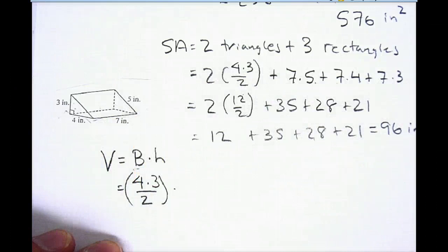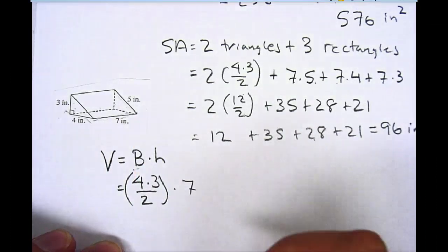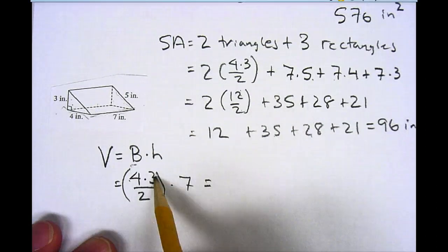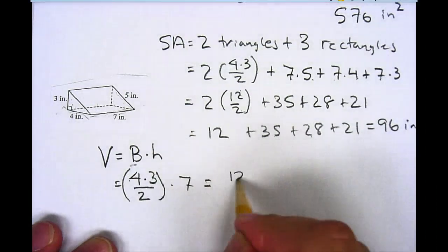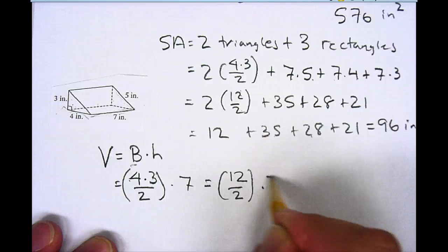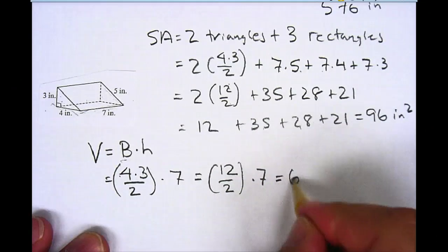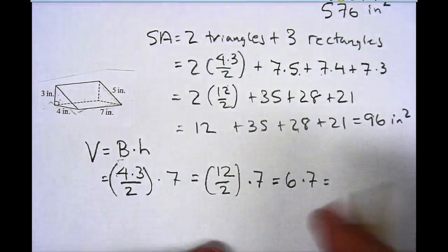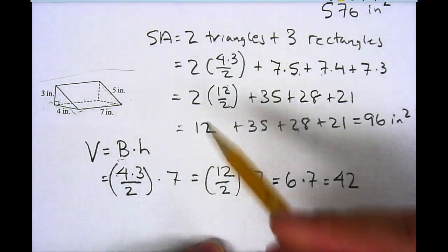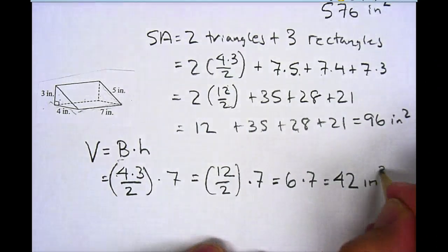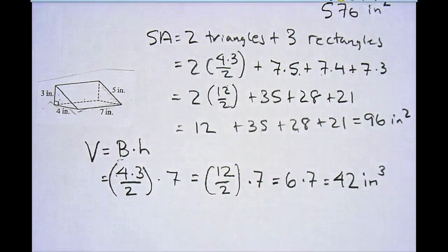So it's going to be times 7. If I solve this: 4 times 3 is 12, so I have 12 divided by 2 times 7. 12 divided by 2 is 6 times 7, and 6 times 7 is 42. Since my units are in inches, it's going to be 42 inches cubed, because I want to find out how many cubes fit inside that triangular prism. That's the definition of volume — how many cubes fit inside something.